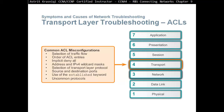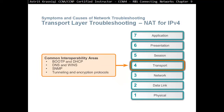Check source and destination port numbers — the source is on the left and the destination is on the right after the IP address, where you put the source port number and direction. Use the established keyword and check common protocols. Other problems could involve BOOTP and DHCP, DNS and WINS server, SNMP, and tunneling or encryption protocols.